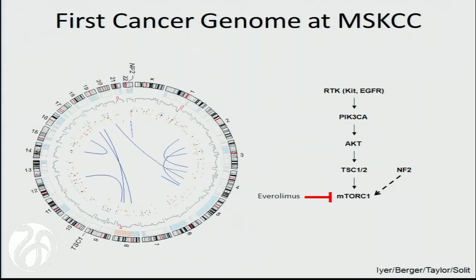We thought these were the main cause of her response. One was in a gene called TSC1 and the other was in a gene called NF2. Both were very interesting because loss of both of these alterations — TSC1 and NF2 — would actually lead to activation of mTORC1, which was the target of the drug she received.